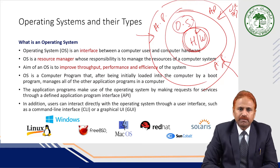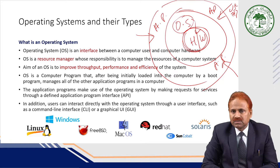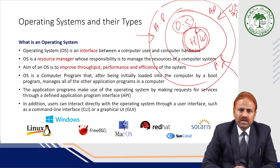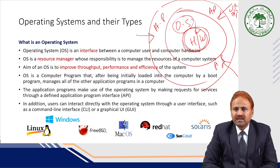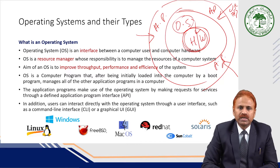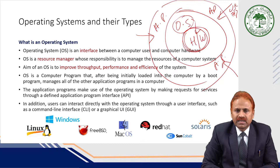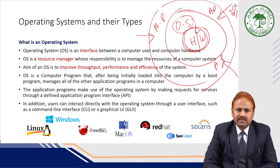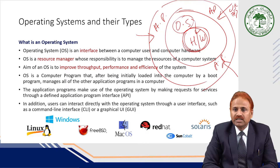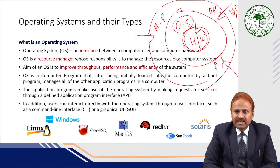An OS is a computer program that, after being initially loaded into the computer by a boot program, manages all the other application programs in a computer. The application programs make use of the operating system by making requests for services through a defined application program interface, which is known as API.